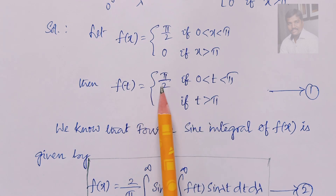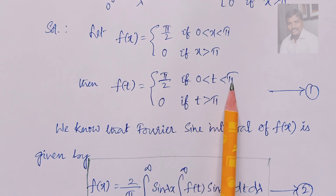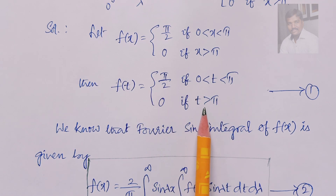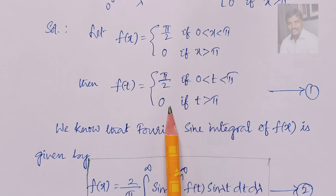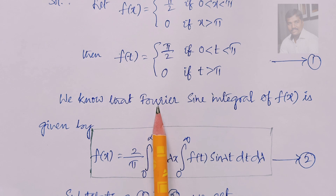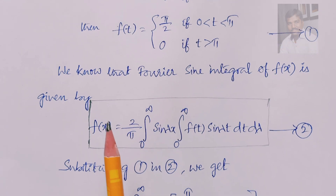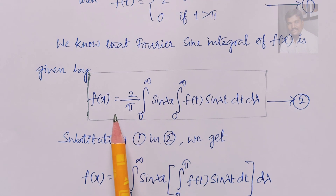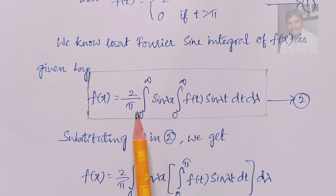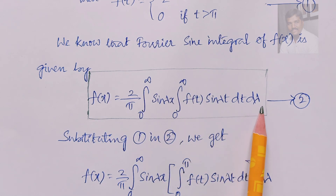We know that the Fourier sine integral of f(x) is given by: f(x) equals (2/π) times the integral from 0 to infinity of sin(λx) times the integral from 0 to infinity of f(t) sin(λt) dt, dλ.